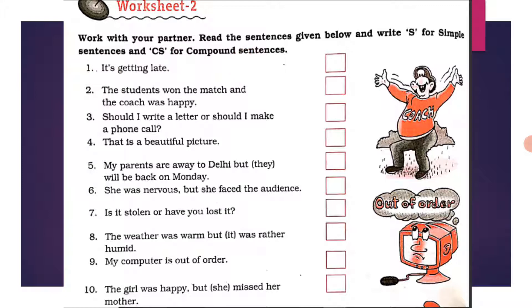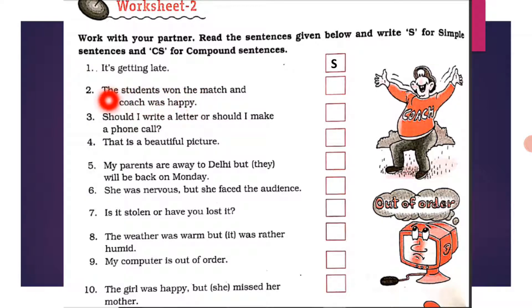We have already made a thorough discussion on simple and compound sentences. You know what simple sentences are and what compound sentences are. For simple sentences you use 'S' and for compound sentences you use 'CS'. So 'It's getting late' — this is a simple sentence.